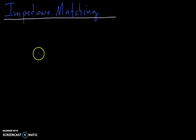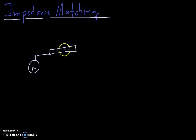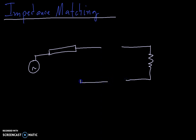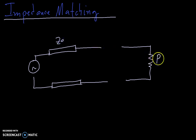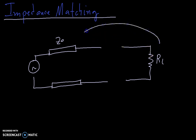Let's suppose for example that we have here a generator, and then we have a transmission line, and then we have our resistive load right here. This is Z0, this is RL, and we want to match this load to the transmission line here.